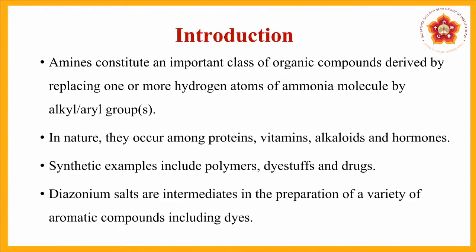Amines are an important class of compounds where hydrogen atoms are replaced by alkyl or aryl groups. In nature they occur as proteins, vitamins, alkaloids, and hormones. Synthetic examples include polymers, dyestuffs, and drugs. We will also study diazonium salts — 'di' indicates 2, 'azo' indicates nitrogen — compounds with two nitrogen atoms having a positive and negative charge, used as intermediates in dye synthesis.